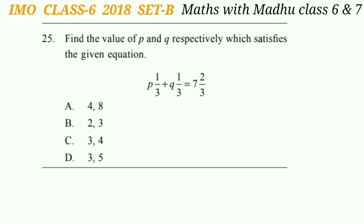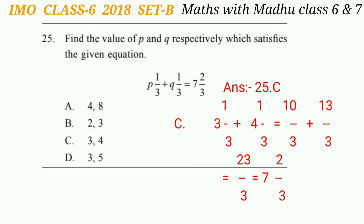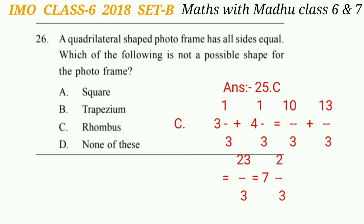Question 25: Find the values of P and Q respectively which satisfy the equation P whole 1/3 + Q whole 1/3 = 7 whole 2/3. The correct answer is option C. Taking P = 3 and Q = 4, we get 23/3, which can be written as 7 whole 2/3. So the answer is option C.